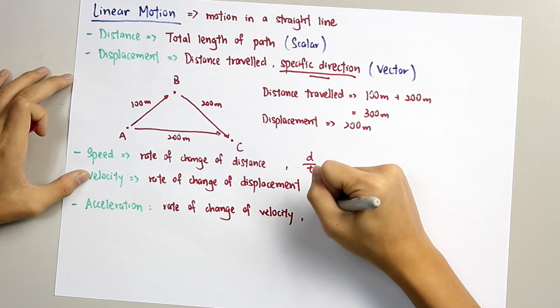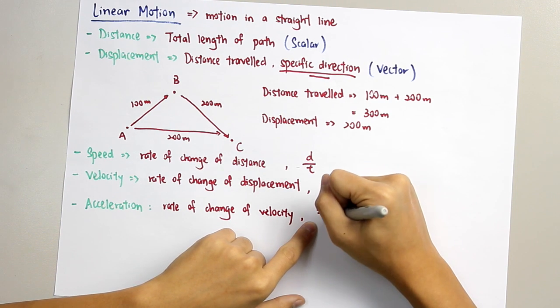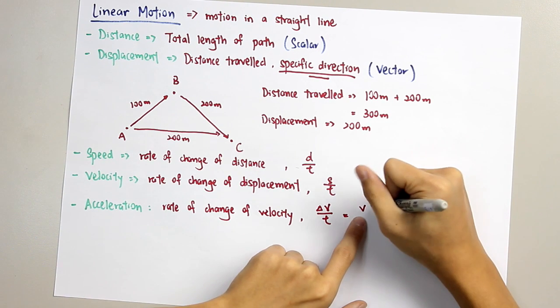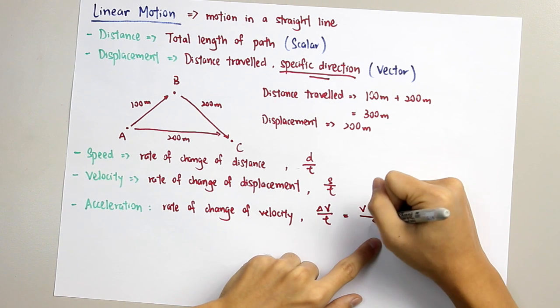And the formula, change of velocity V over time. Or you can write it as the final velocity V minus initial velocity U over time.